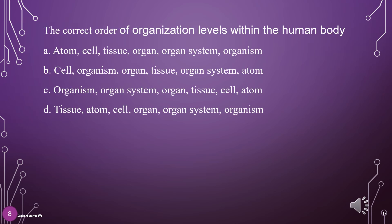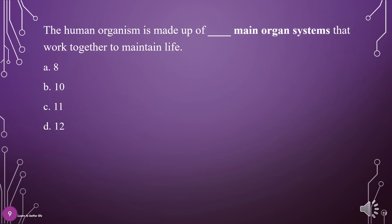The correct order of organization levels within the human body: A. Atom, Cell, Tissue, Organ, Organ System, Organism; B. Cell, Organism, Organ, Tissue, Organ System, Atom; C. Organism, Organ System, Organ, Tissue, Cell, Atom; D. Tissue, Atom, Cell, Organ, Organ System, Organism. The answer is A: Atom, Cell, Tissue, Organ, Organ System, Organism.